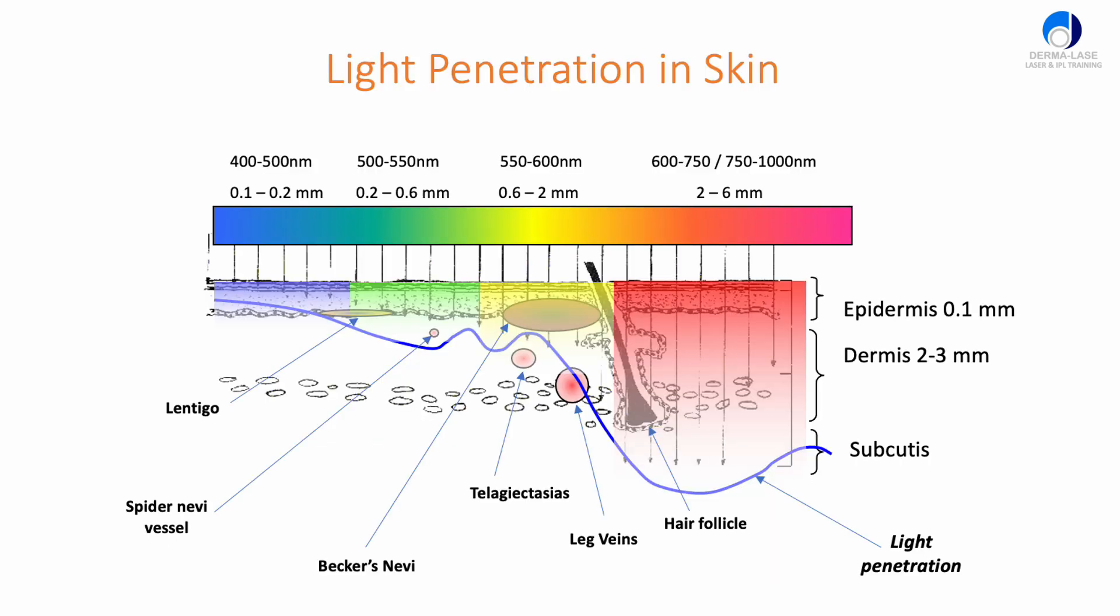Just to finish off this section, if we look purely at how light penetrates the skin based solely on the wavelengths, we can see that blue light and green don't really penetrate too far into the skin. Yellow light penetrates a little bit further. But red and infrared penetrate the furthest.